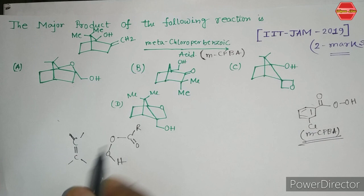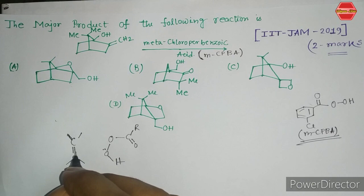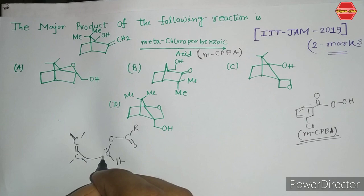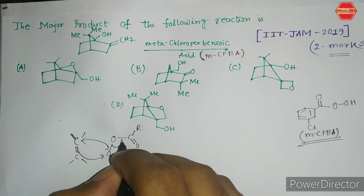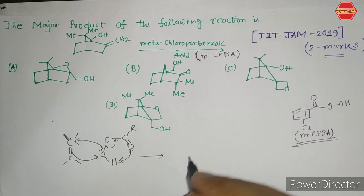In the mechanism, this double bond attacks over the oxygen center. That oxygen has a lone pair of electrons, which also attacks the carbon center, and that is why this three-membered epoxide ring is formed. The oxygen then takes a proton from the acid — that's how the reaction proceeds.